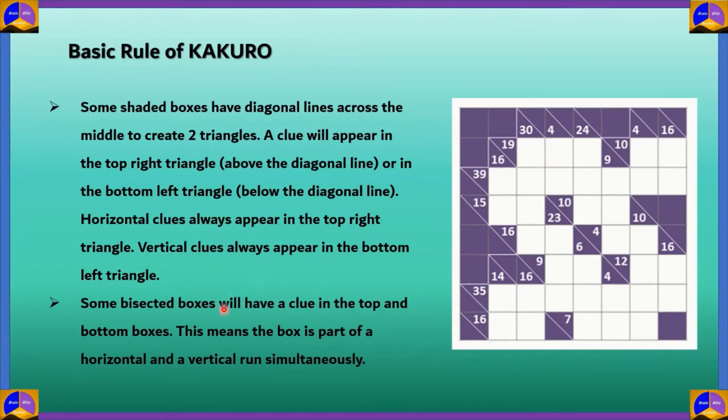Some of these bisected boxes will have a clue in the top and bottom boxes. This means that the box is a part of a horizontal and a vertical run simultaneously. Over here, you have a horizontal block as well as a vertical block. The bottom triangle represents vertical, and the upper right triangle represents the horizontal block.